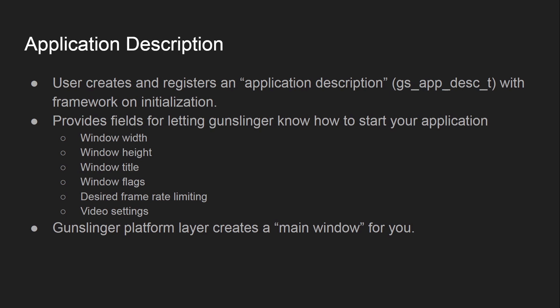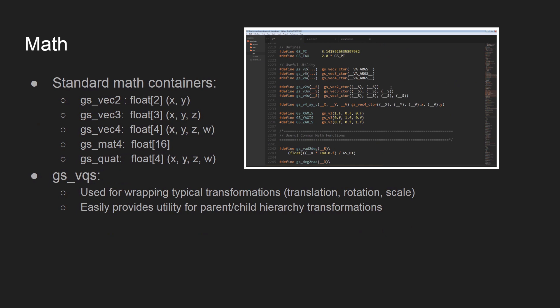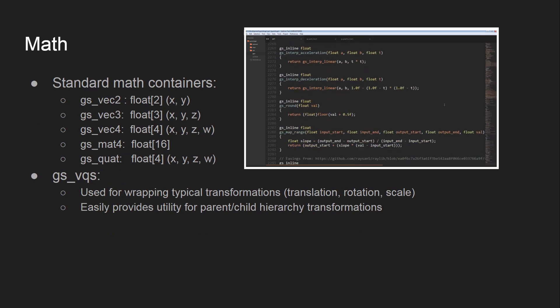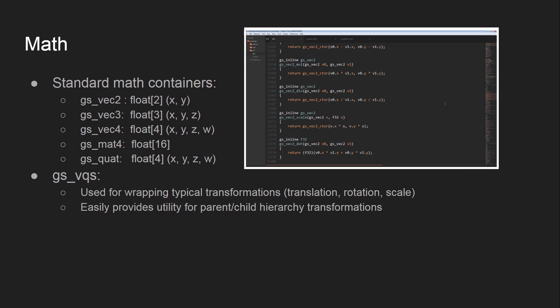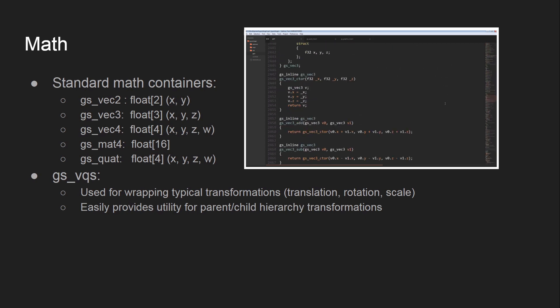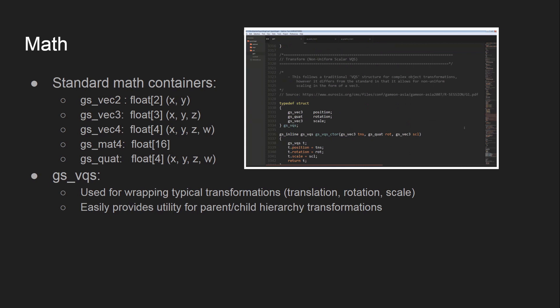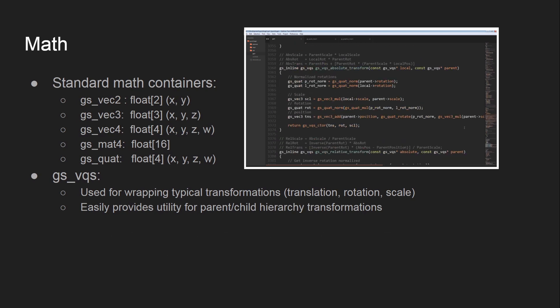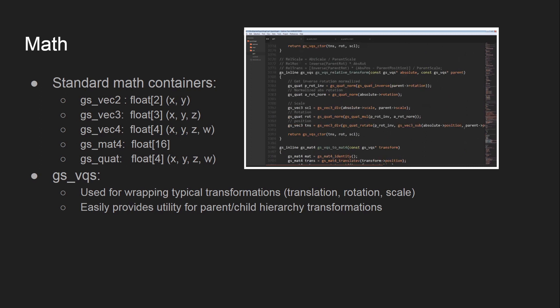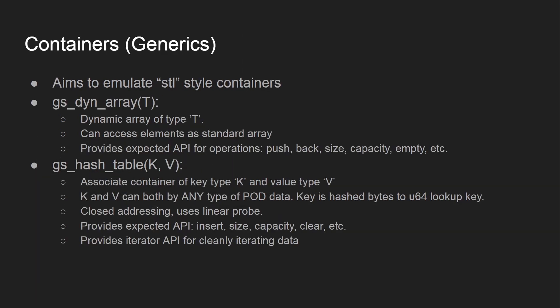On start, Gunslinger creates a main window for you, easily accessible through various APIs, though you can create other windows as well. The math library provides standard math containers you'd expect: vec2, vec3, vec4 vector types, a mat4x4 matrix class, and a quaternion class with four floats. Gunslinger also provides a VQS — Vector Quaternion Scale — structure typically used for wrapping transformations like translation, rotation, and scale, providing a simple utility for complex parent-child hierarchy transformations.